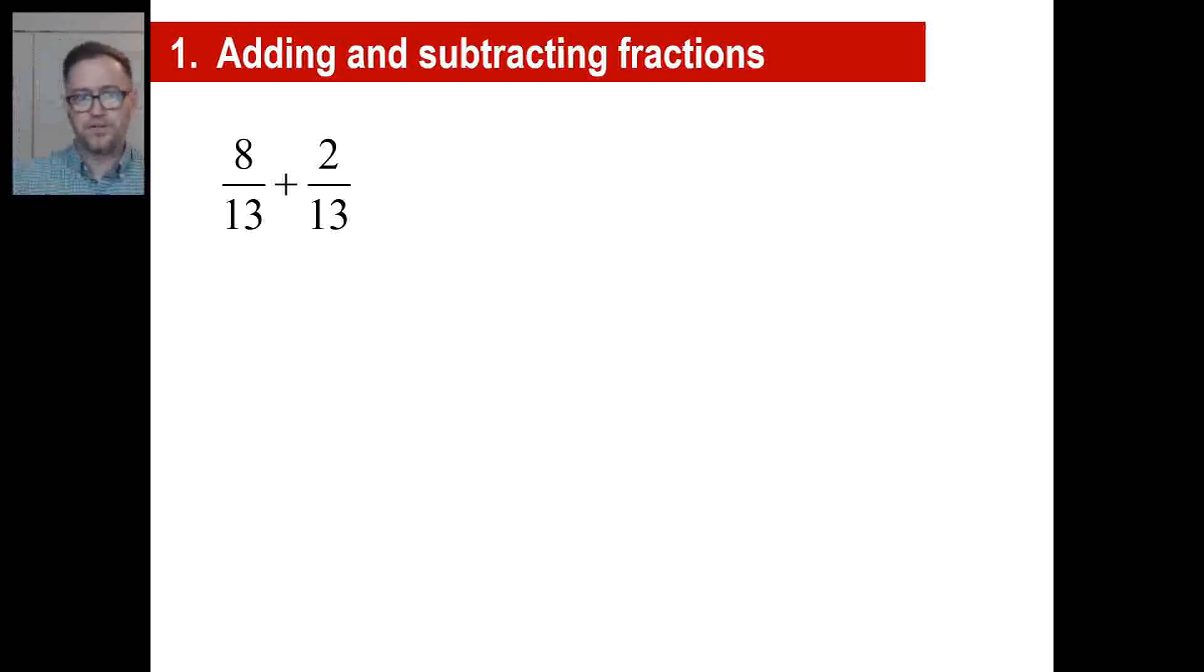If they have the same denominator, you can just go across and go, that's 10 over 13, add them that way. If they have different denominators, your job, and this is why you memorize your times tables, one of the reasons is so you can do these quickly. You'll recognize that the least common multiple of 8 and 12, the smallest number that 8 and 12 both go into is 24. So you can change your fraction. 8 times 3 is 24. 3 times 3 is 9. 12 times 2 is 24. So 5 times 2 is 10. And you'll get 19 over 24.